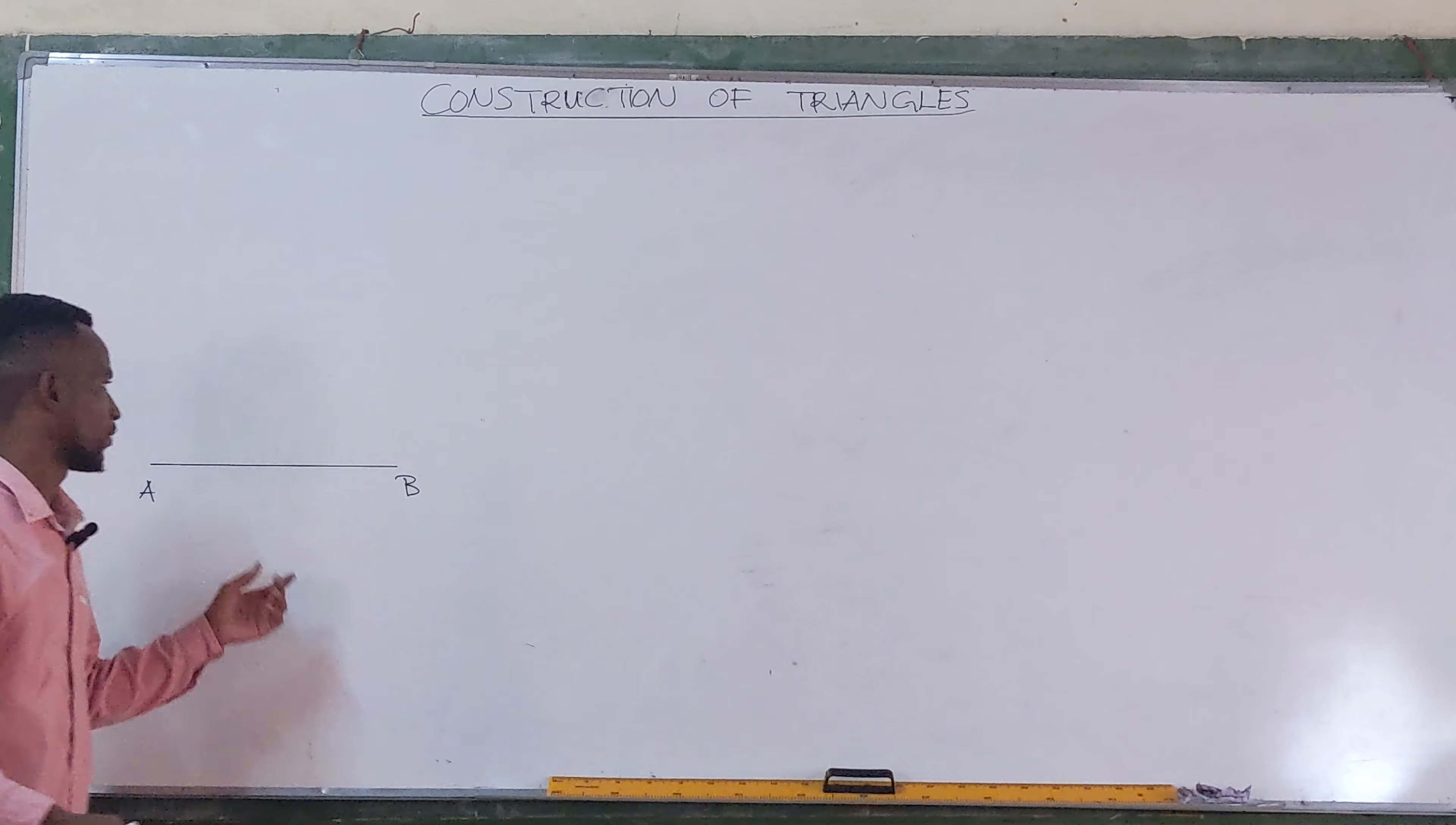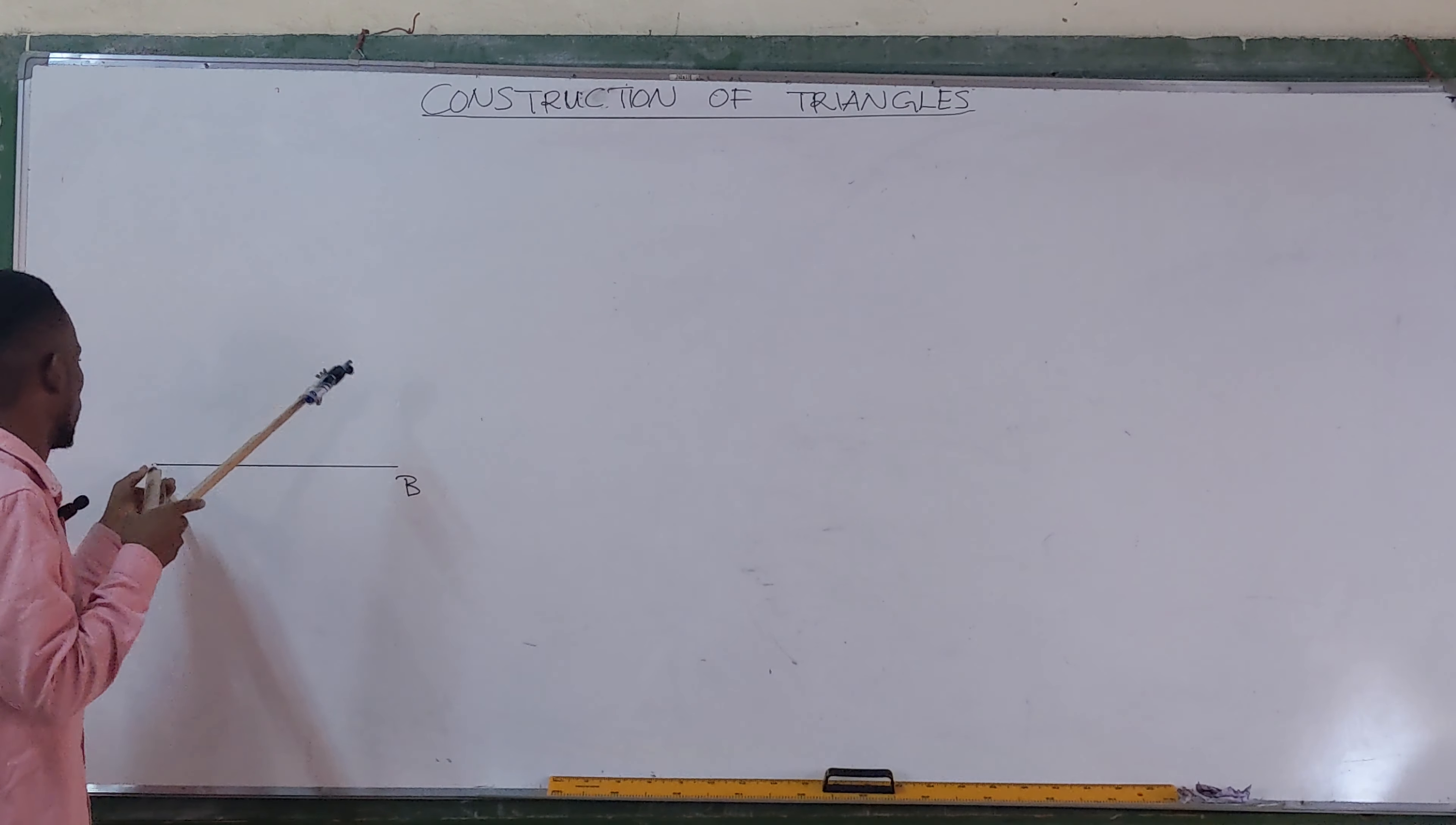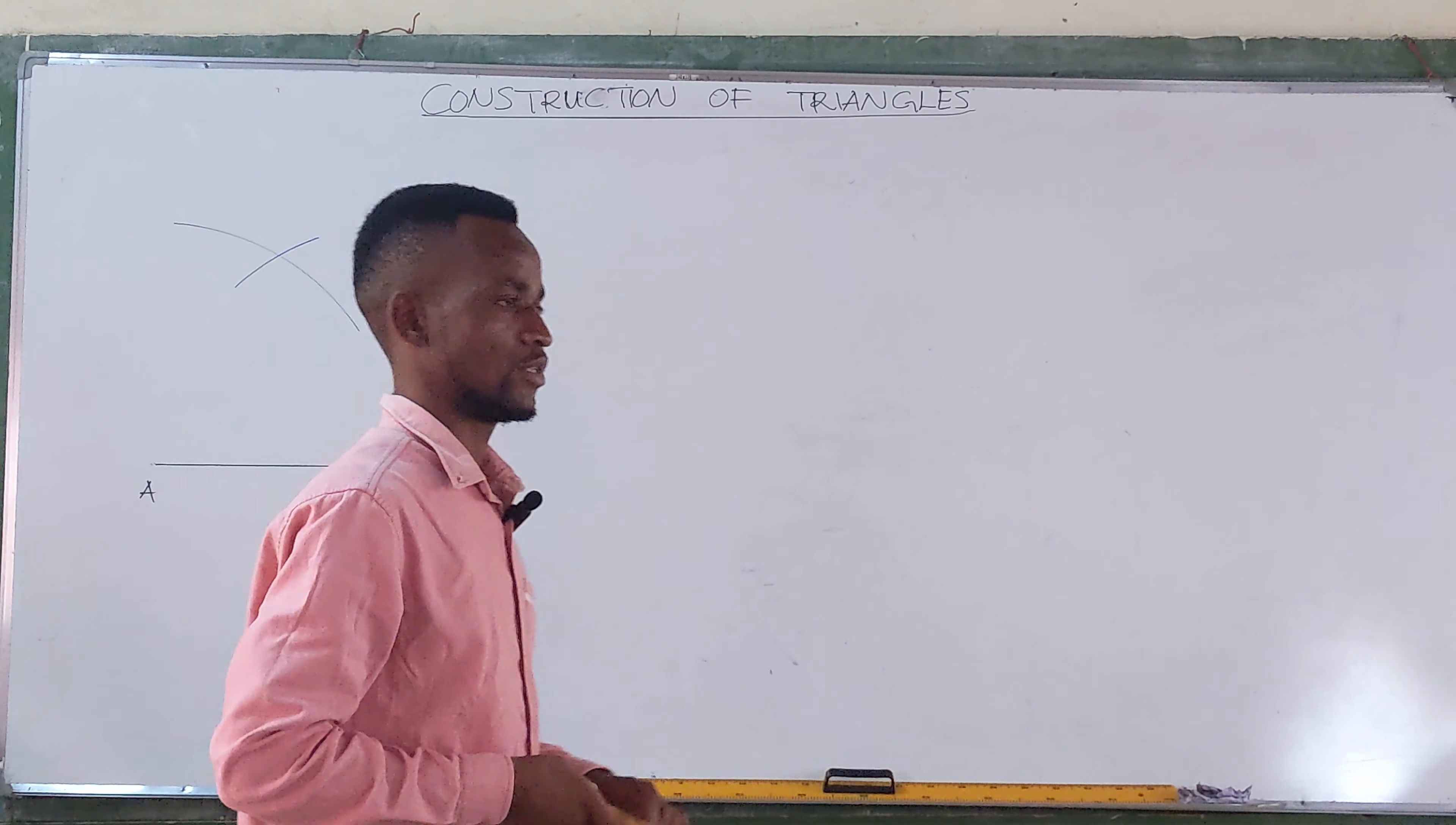So what we do is, after drawing line AB, you get your compass, open it to the given length again, which is 65 in this case. So after drawing line AB 65, you get your compass, open it to 65, and then you strike an arc like this. In fact, you go to point B, and then strike an arc again to intersect, to meet with the first one.